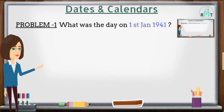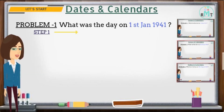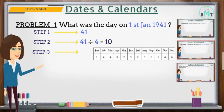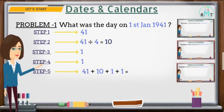Problem 1: What was the day on 1st January 1941? Step 1: Take the last two digits of the year, which is 41. Step 2: Divide 41 by 4 and take the quotient, which is 10. Step 3: Write the key associated with the month January, that is 1. Step 4: Take the date, which is 1. Step 5: Add all the digits — 41 + 10 + 1 + 1 — so we get 53.